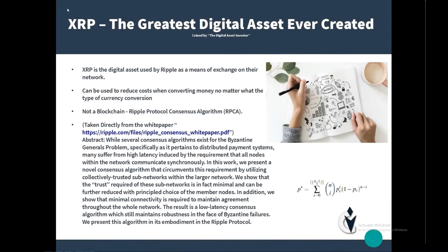XRP is the greatest digital asset ever created. It's used by Ripple as a means of exchange on their network and can be used to reduce costs when converting money, no matter what the type of currency conversion. Ripple is not a blockchain — it's actually called the Ripple Protocol Consensus Algorithm.